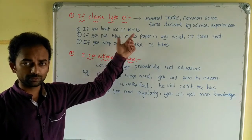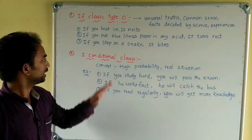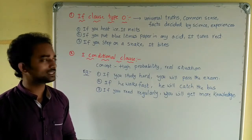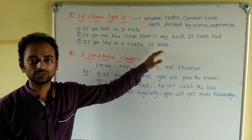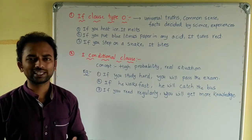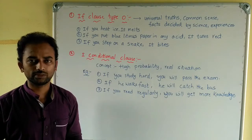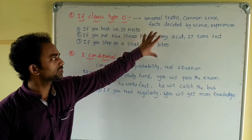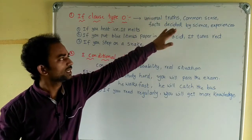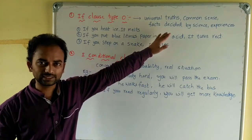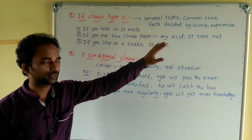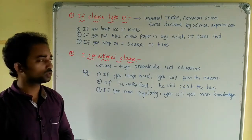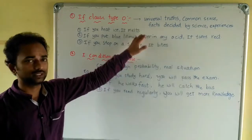Another example: if you step on a snake, it bites — that is a common experience. So in these kinds of situations — universal truths, common sense, facts, or common experiences — we use type 0 conditional.